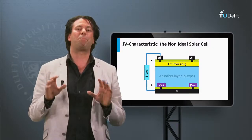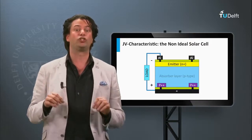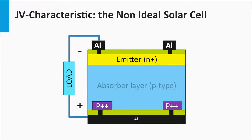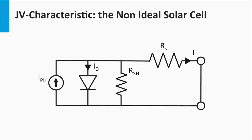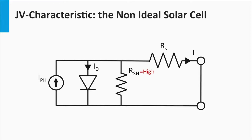The second resistance is the so-called parallel resistance, or also referred to as the shunt resistance. A shunt is a macroscopic defect in the solar cell which provides an alternative path for the generated photocurrent. Examples of a shunt are a crack through the semiconductor layers or a current path at the edge of the solar cell. In the electric circuit, the shunt resistance appears as a resistor connected in parallel with the current source and the diode. A low shunt resistance means that a large fraction of the photocurrent prefers to travel through the shunt, while a high shunt resistance means that less or no photocurrent is lost through the shunt.